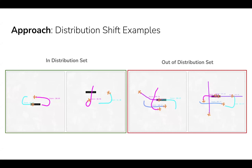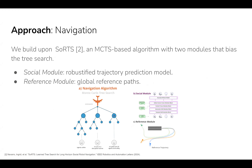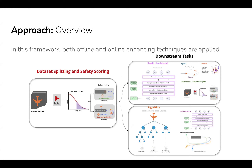This is an example of the in-distribution and out-of-distribution sets. For robust trajectory prediction, we use Amelia TF as a backbone and apply a remediation technique for robustification. We augment a cross-attention block using scene score features and condition the model's loss function with agent scores. For navigation, we build upon SORT and use the robust trajectory prediction model as its social model. This is an overview of the framework, where both offline and online-enhancing techniques are applied.